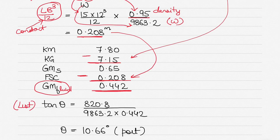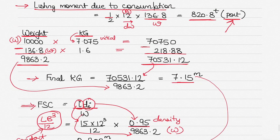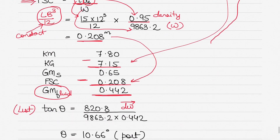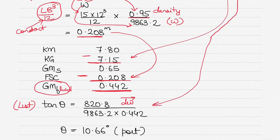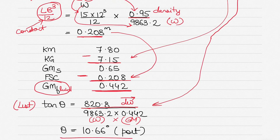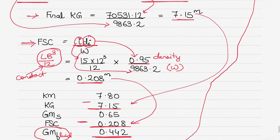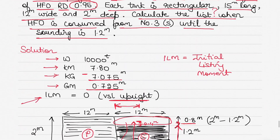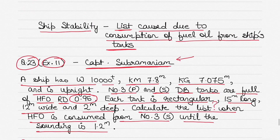To calculate the final list, we use: tan θ = listing moment / (displacement × GM fluid) = 820.8 / (9,863.2 × 0.442), giving θ = 10.66 degrees to port, since the oil was consumed from the starboard tank. Thanks for watching — if you have any queries, concerns, or feedback, let me know in the comment section.